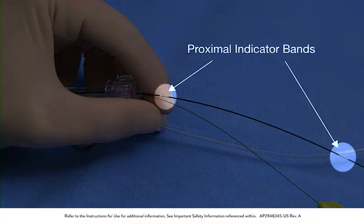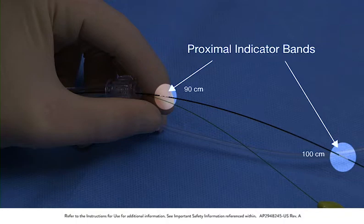Notice the proximal indicator bands are positioned at 90 centimeters and 100 centimeters from the distal tip of the delivery catheter to aid catheter introduction.